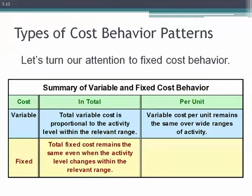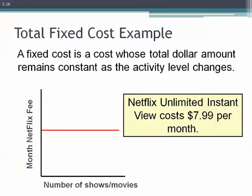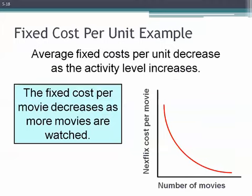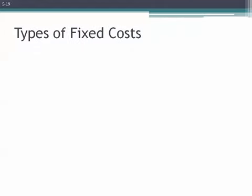Moving on, let's look at fixed costs. A fixed cost is a cost whose total dollar amount remains constant as our activity level changes — even when output increases, the cost remains constant in total. Think about Netflix's unlimited instant view video streaming, typically about $7.99 per month. It doesn't matter how many shows or movies we stream — that fixed fee remains constant at $7.99 per month. However, the fixed cost per unit does go down as the activity level goes up, so as the number of movies increases, our cost per movie decreases.